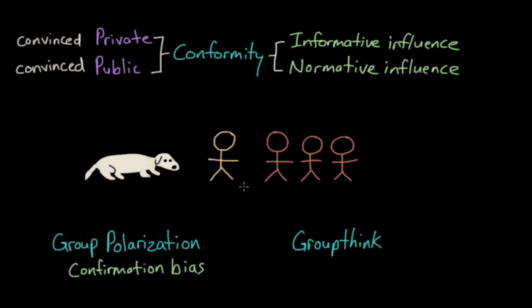So the first group process that we'll review today is conformity. This won't be the first time you've heard about conformity. You've probably just known it by another name, peer pressure. Conformity is a tendency for people to bring their behavior in line with group norms, and it's so powerful in social situations.